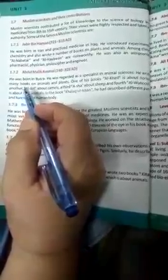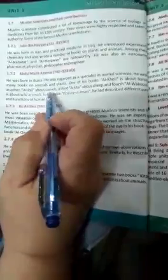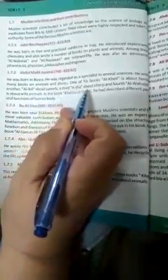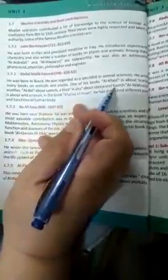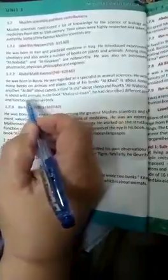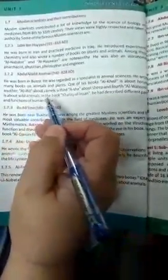His famous books are following: Al-Abil, which is about camels; Al-Khil is about horses; Asha is about sheep; and fourth, Al-Wahush is about wild animals. He also studied the anatomy of the human body, the internal structure of human beings.